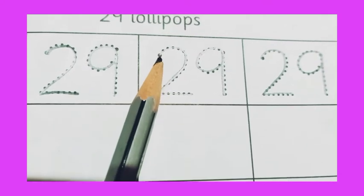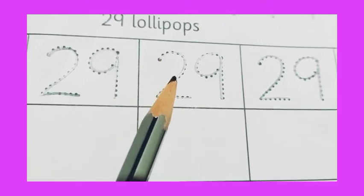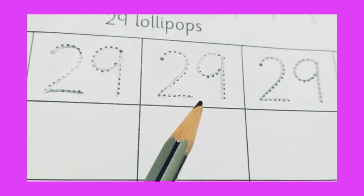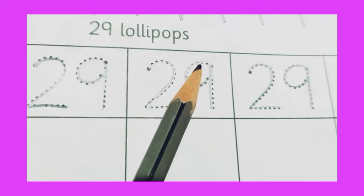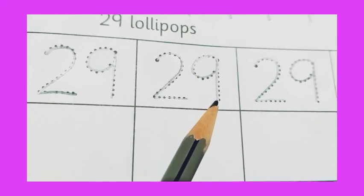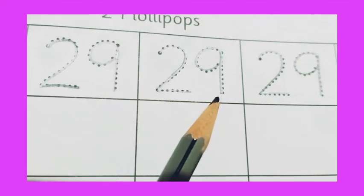Again we write. First of all we draw a curl, join one slanting line and join one slipping line. This becomes 2. Then we draw a curl, join one standing line. This becomes our 9. So 2, 9 together becomes 29.